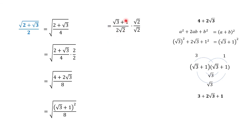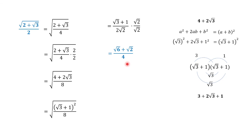Let us rationalize this expression by multiplying square root of 2 over square root of 2. So we have square root of 2 times square root of 3 equals square root of 6, and 1 times square root of 2 is square root of 2. Then 2 square root of 2 times square root of 2 is positive 4. Therefore, square root of 2 plus square root of 3 over 2 is equal to square root of 6 plus square root of 2 over 4.